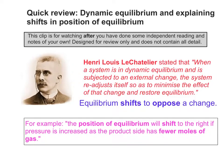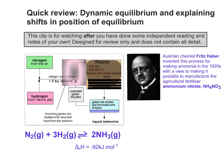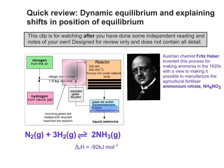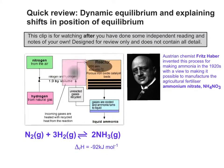Let's take an example you've come across before: the Haber process. The process was invented by a German chemist called Fritz Haber. What he was trying to do was produce ammonia, to use this ammonia to manufacture fertiliser — ammonium nitrate — for agriculture. Because certain parts of the world aren't blessed with good quality soils, his idea was to produce ammonium nitrate cheaply using relatively easy raw materials such as nitrogen and hydrogen.